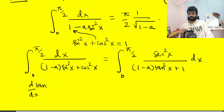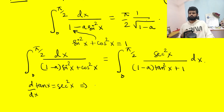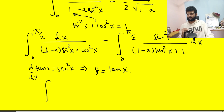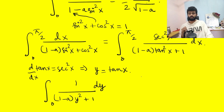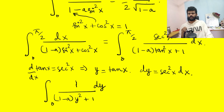Since the derivative of tan x is sec²x, we make the substitution y = tan x. The limits change: tan 0 = 0 and tan(π/2) = ∞. With dy = sec²x dx, the integral becomes the integral from 0 to ∞ of dy divided by (1 − a·y² + 1).